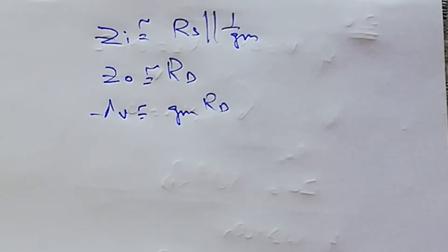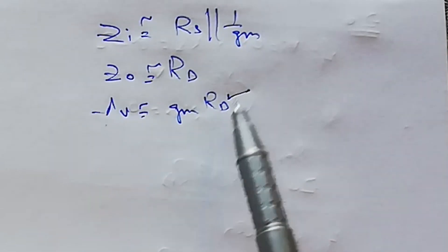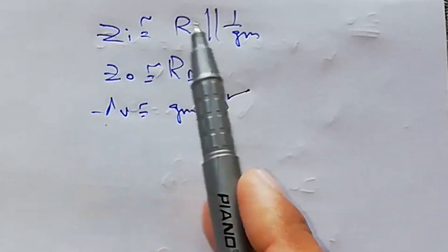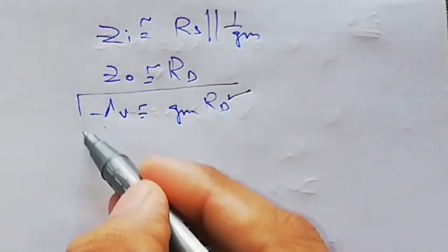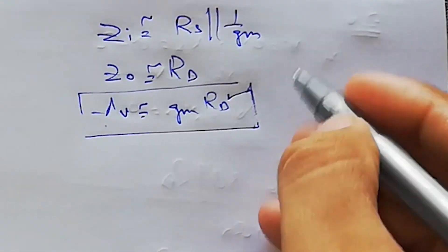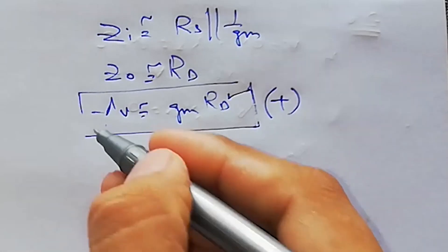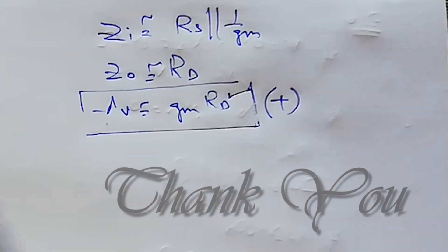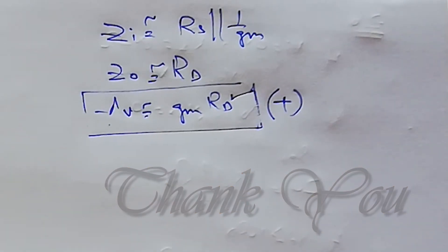So we can clearly see that voltage gain is dependent upon gm and RD, output impedance is dependent on RD, and input impedance is dependent on RS. Looking at the voltage gain value, we can see that this is a positive gain, and a positive gain means the input voltage and output voltage will always be in phase.